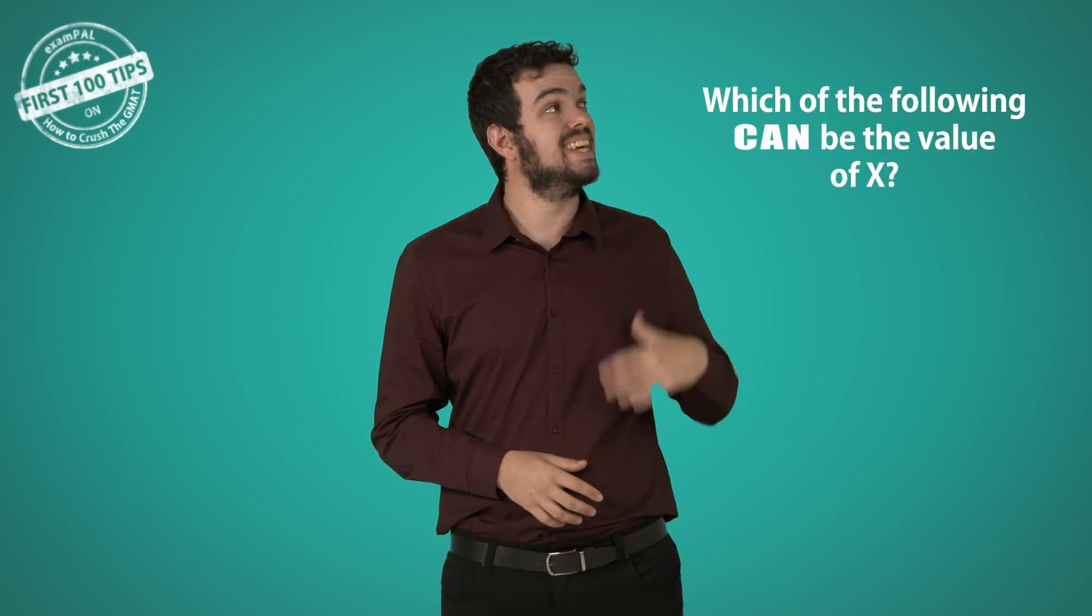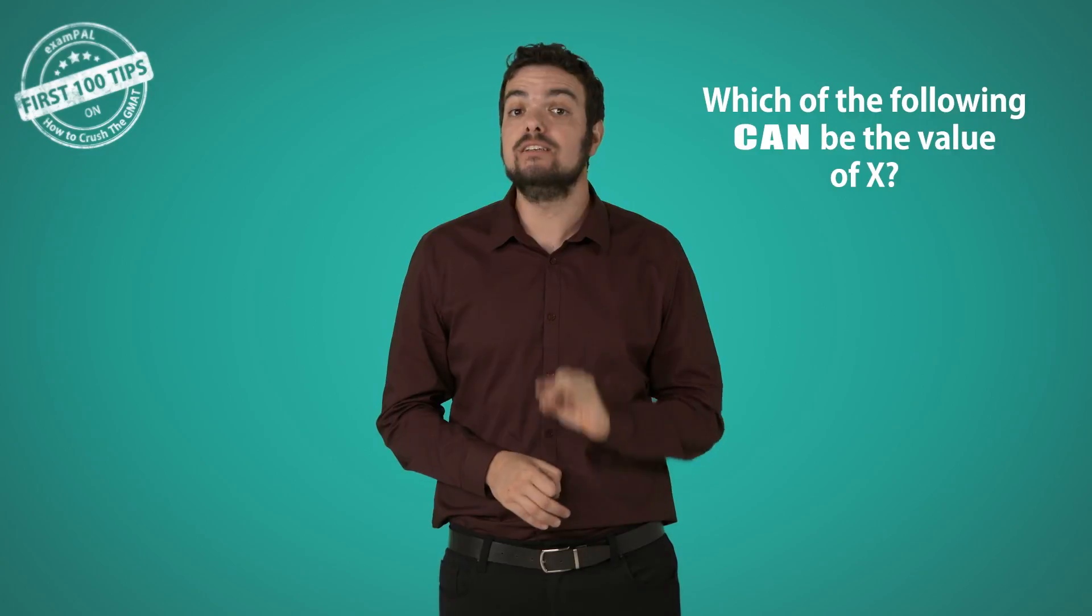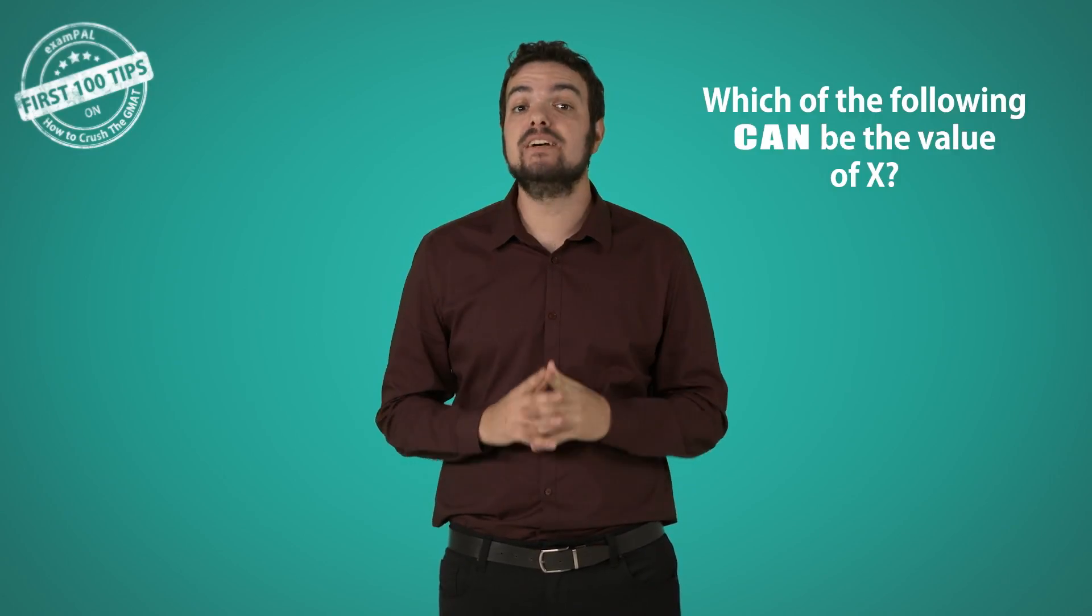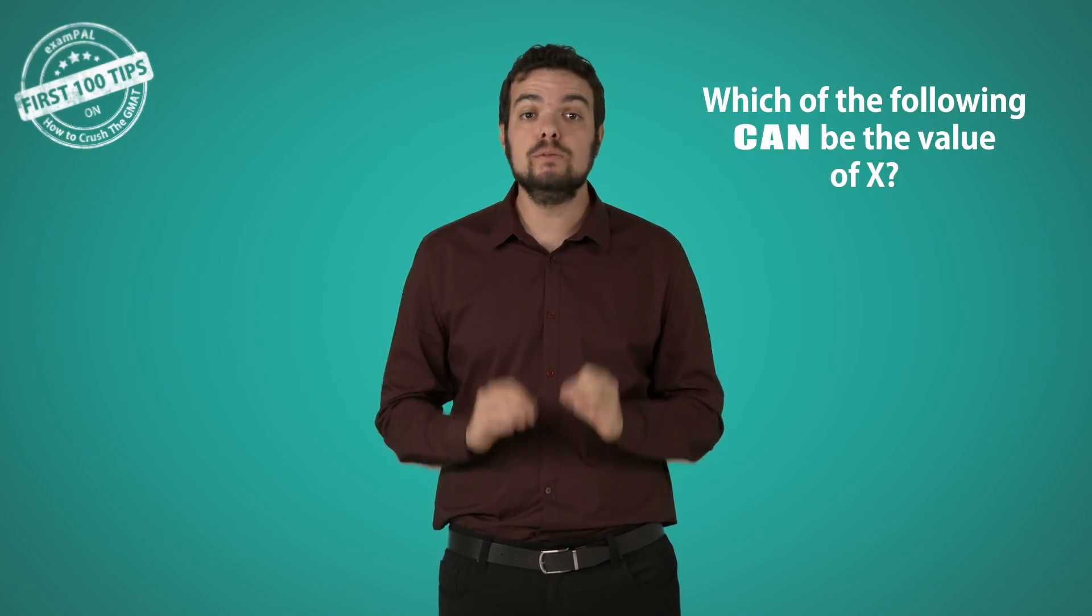But if we're asked which of the following can be the value of x, that's a clear sign to use the answers, because it means all other answers cannot be the value of x and will be eliminated. The best way to use the answers is usually to start with the middle one. That's because in most questions we'll be able to estimate whether the answer is too small or too large, and use this to eliminate not just the middle answer, but two other answers as well.